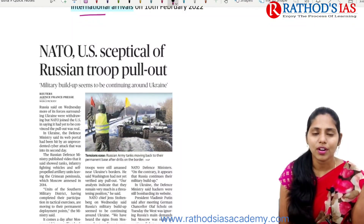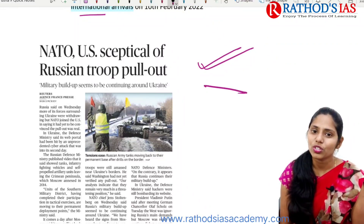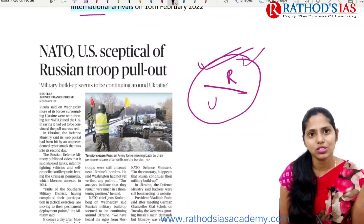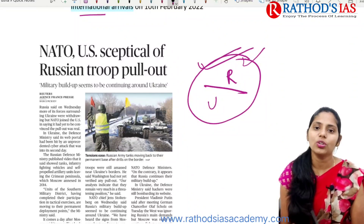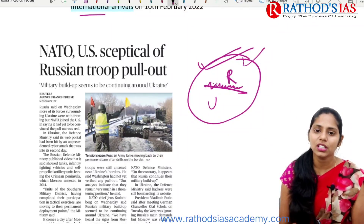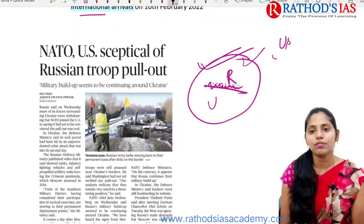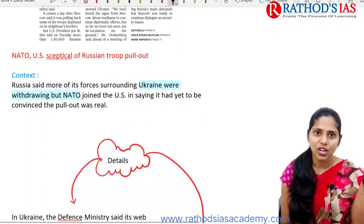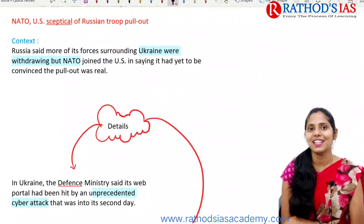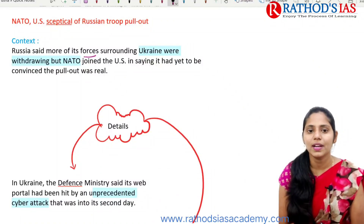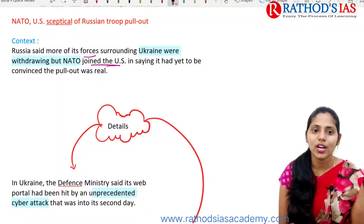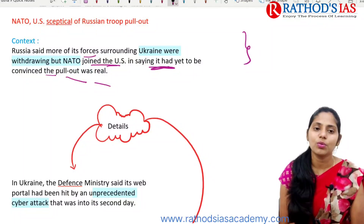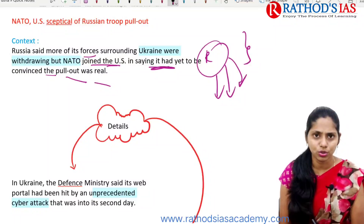Now let us see the next topic: NATO-US skeptical of Russian troop pullout. In yesterday's lecture we studied about the crisis between Ukraine and Russia. Across the Russia-Ukraine border, there has been increasing military presence from the Russian side. Because of the influence of the US and UK, Russia said it was going to pull out troops across the border. The context is that Russia said more of its forces surrounding Ukraine were withdrawing, but NATO joined the US in saying it had yet to be convinced the pullout was real.